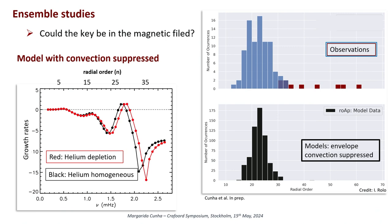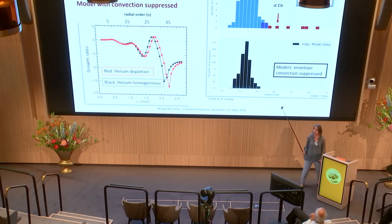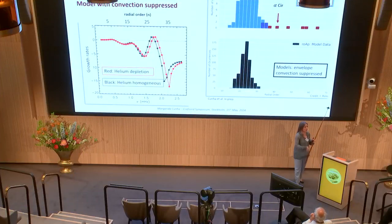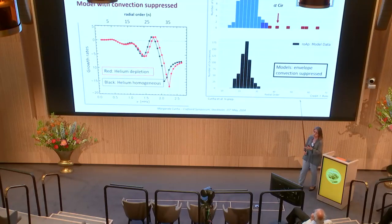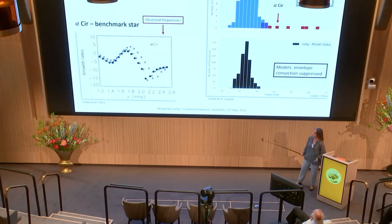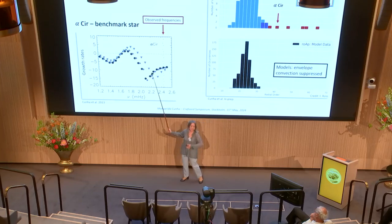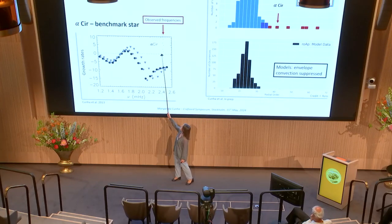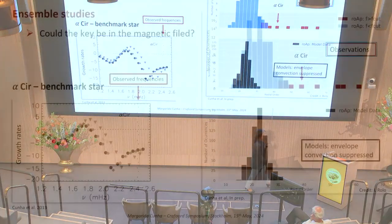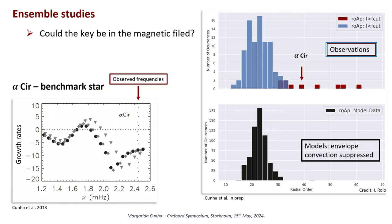Except we are not fully happy — because there is a tail in the observed distribution that we don't see in our models. Of course the first thought is that perhaps the radial orders are not well estimated for those few stars. But we do have some benchmark stars here and did quite a lot of tests. For alpha Cir, for which we have interferometry and know its radius reasonably well, even trying to change the parameters within significant uncertainties — being very generous — we have absolutely no driving in these models with convection suppressed in the region where the oscillations are observed. So we have a problem here.